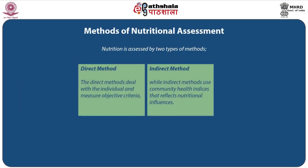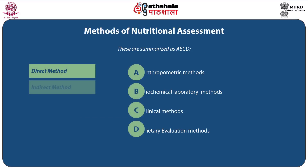Nutrition is assessed by two types of methods: direct and indirect. The direct method deals with the individual and measures objective criteria, while the indirect methods use community health indices that reflect nutritional influences. Direct methods may be summarized as ABCD: A for Anthropometric Methods, B for Biochemical Laboratory Methods, C for Clinical Methods, and D for Dietary Evaluation Methods.